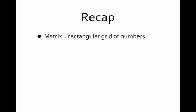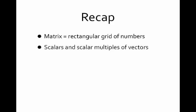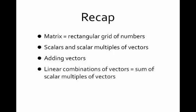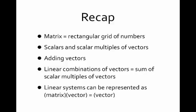Let's recap what we've learned. A matrix is just a rectangular grid of numbers. We talked about scalars and how to scalar multiply vectors, how to add vectors together if they have the same length, and linear combinations of vectors — which are sums of scalar multiples of vectors. The important thing is that we can think about linear combinations and matrices times vectors to rewrite or represent any linear system.